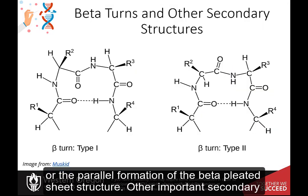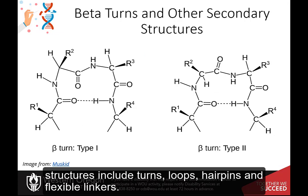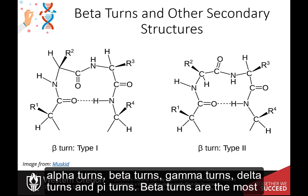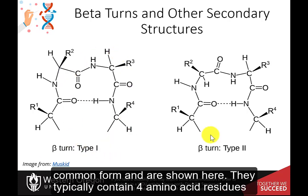Other important secondary structures include turns, loops, hairpins, and flexible linkers. There are many different classifications of turns within protein structures, including alpha turns, beta turns, gamma turns, delta turns, and pi turns. Beta turns are the most common form and are shown here.